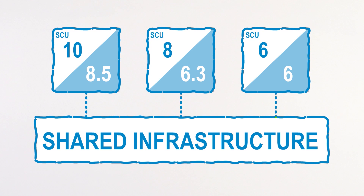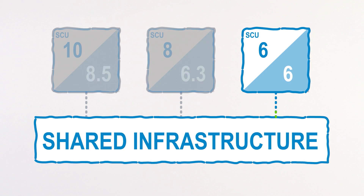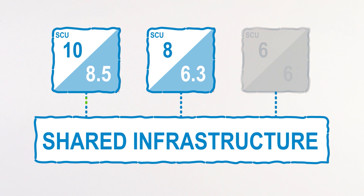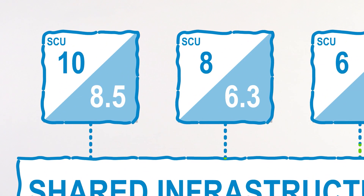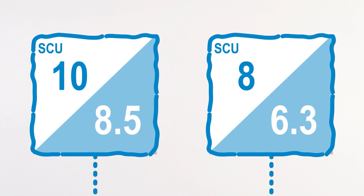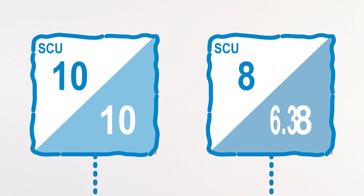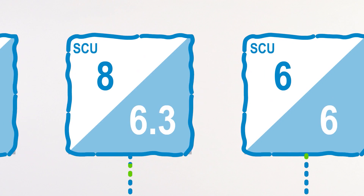Based upon the results that we get, we know if it's achieving its target performance or it's not, and we can make adjustments. If it's getting more performance than it was allocated, then we dial it back. If it's not getting enough, we try to give it some more. If we can't give it more, there might be a noisy neighbor.